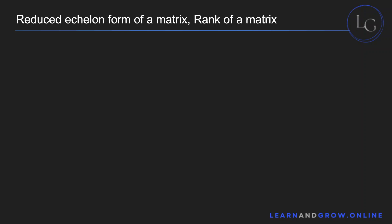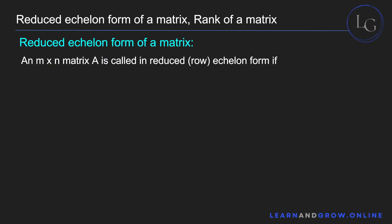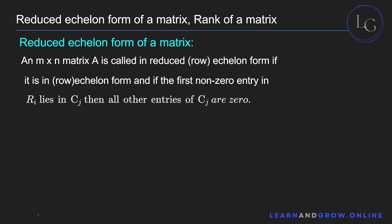Let's discuss the reduced echelon form of a matrix. If we have a matrix A, it must fulfill two conditions to be in reduced echelon form: first, it must be in its row echelon form, and second, if the first nonzero entry in row i lies in column j, then all other entries of column j must be zero. In simple terms, the leading entry of a row must also be the only nonzero entry in its respective column.